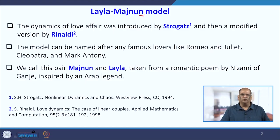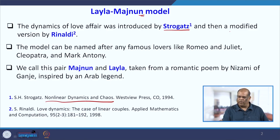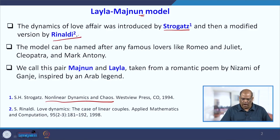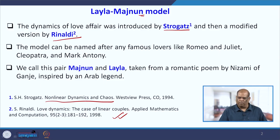This kind of model was first introduced by Strogatz in his famous book Nonlinear Dynamics and Chaos, and later a modified model was given by Rinaldi in a particular paper. This model can be generalized for any famous couple like Romeo and Juliet.